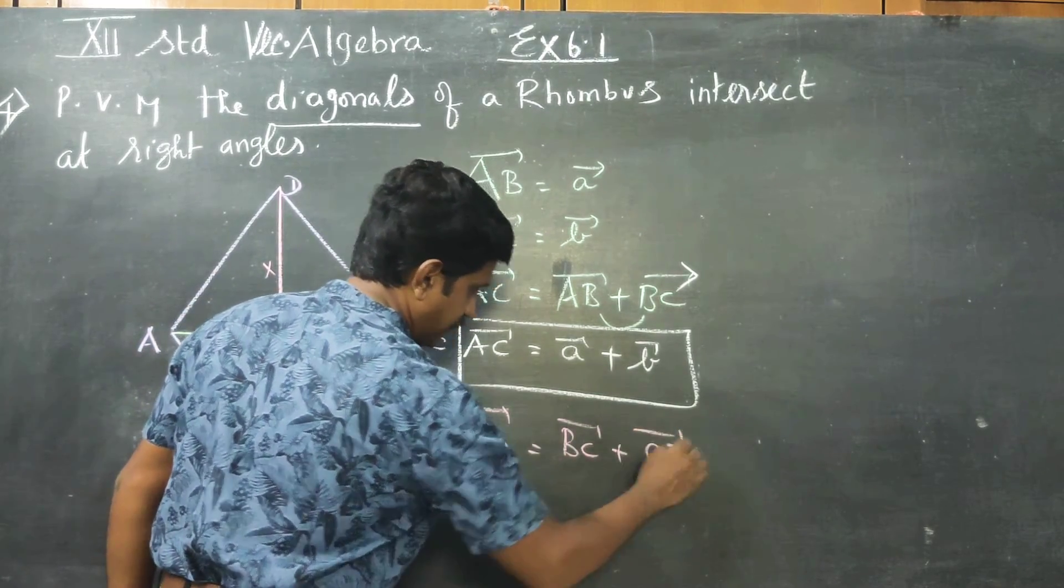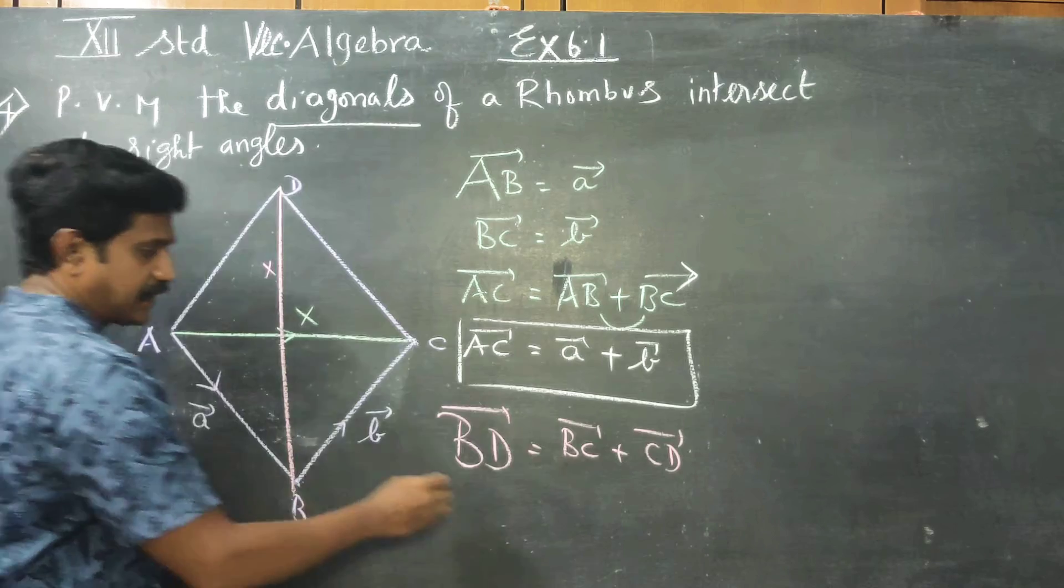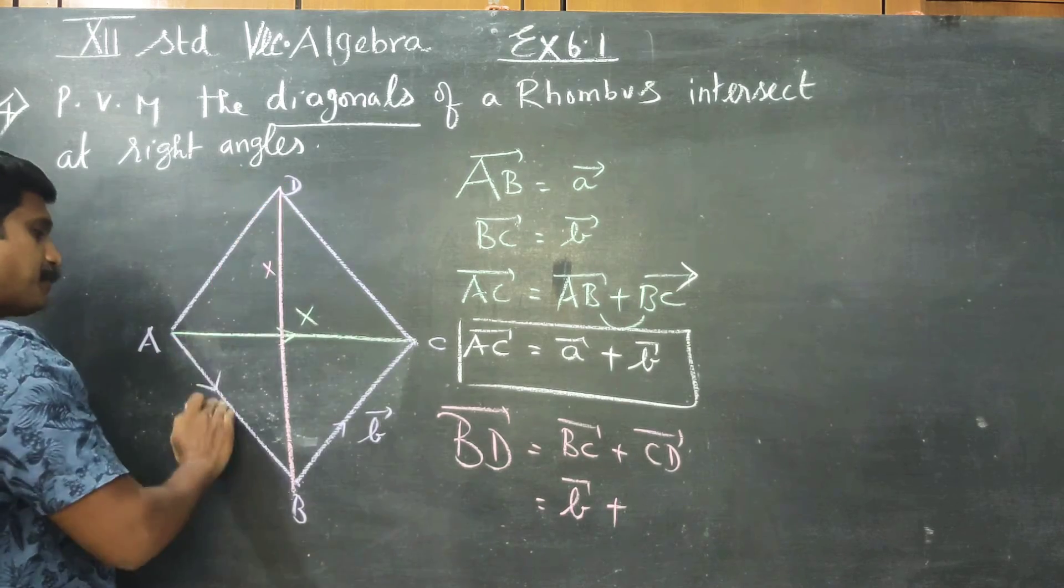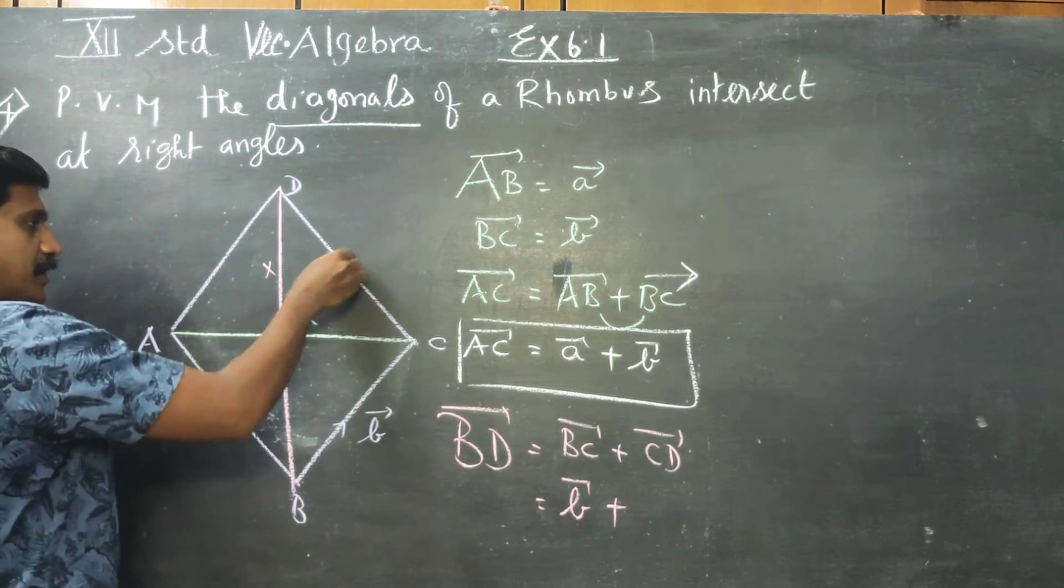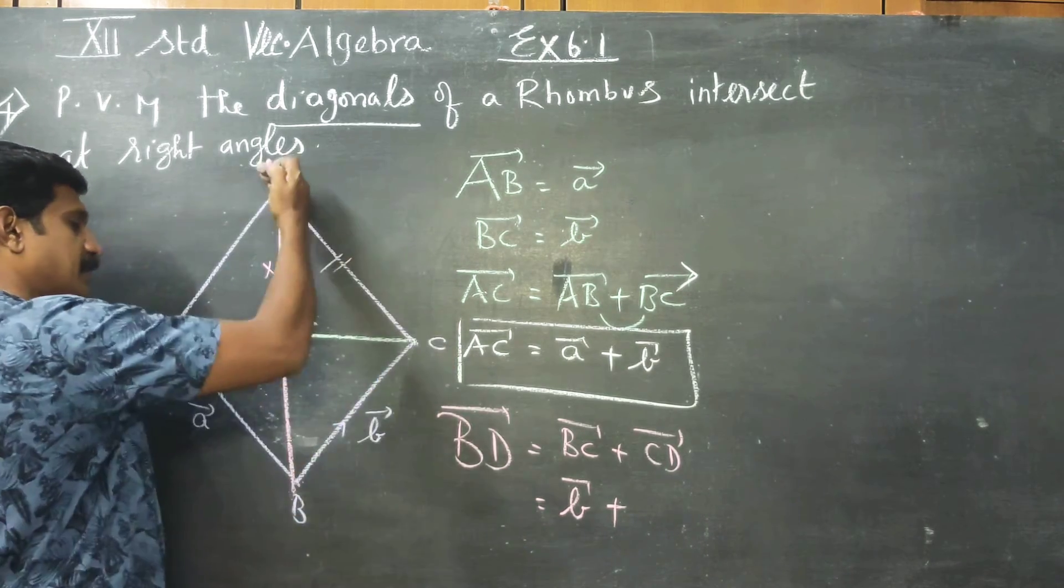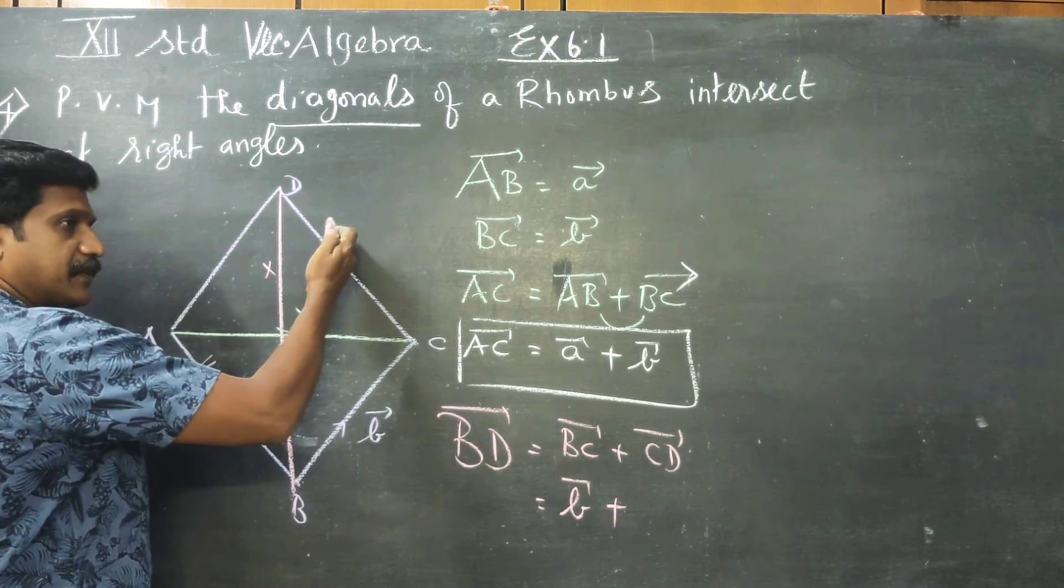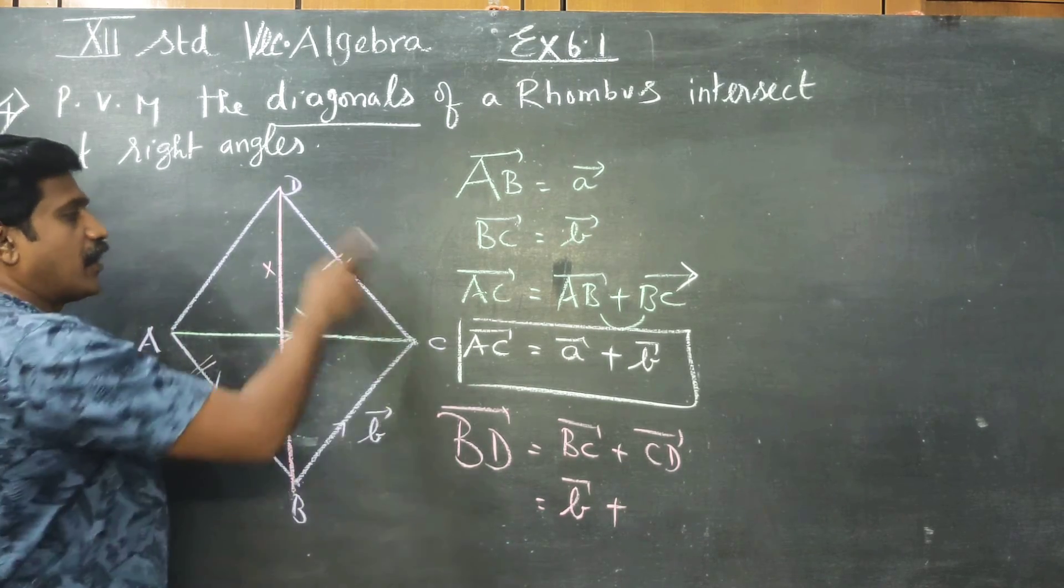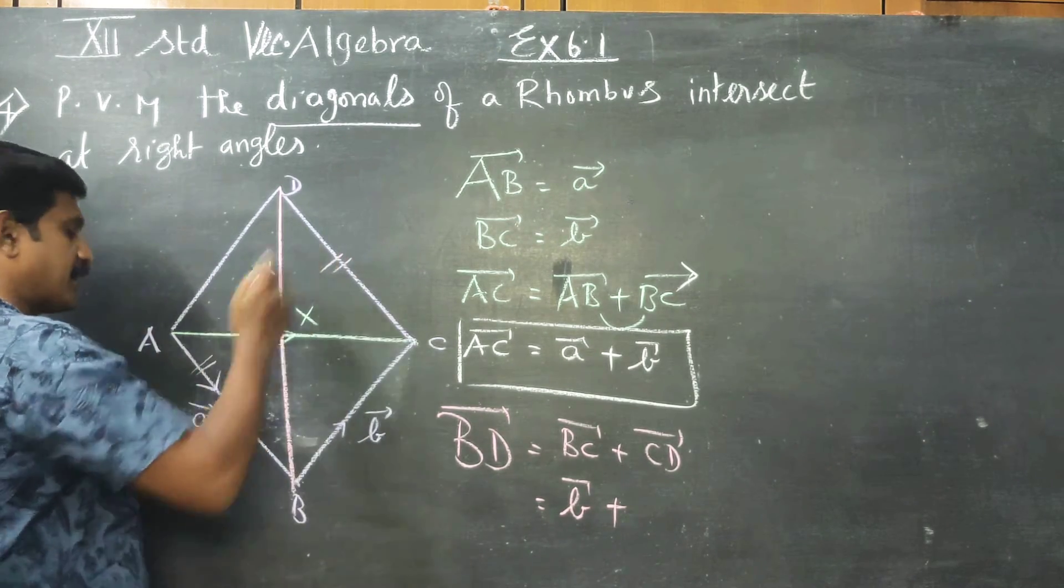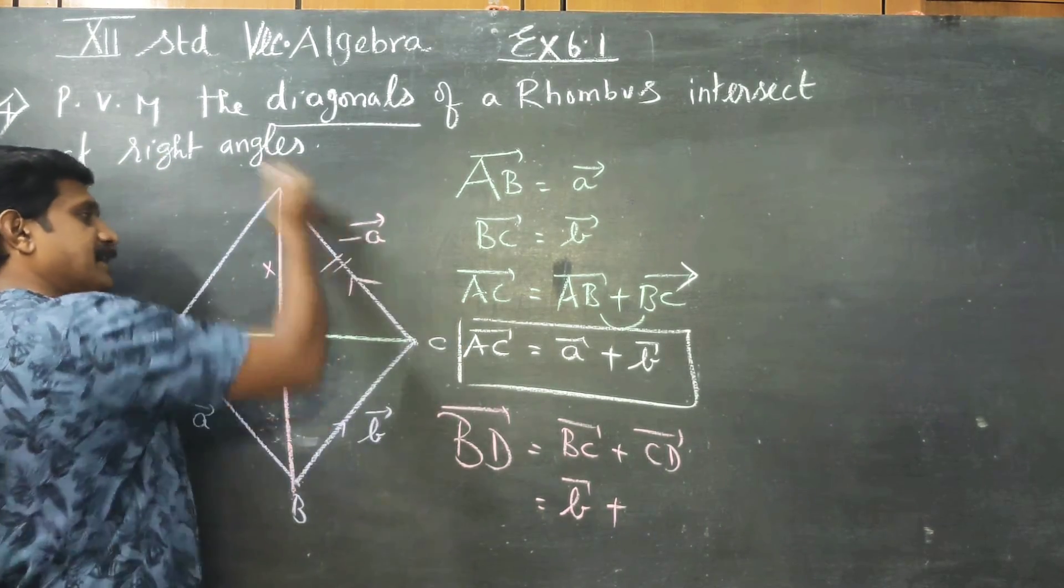BC plus CD. BC answer is b vector, plus CD. CD is parallel to AB. All are equal, measurements are equal but directions are opposite. Now this answer is minus a vector. CD answer is minus a vector.